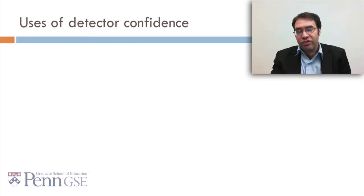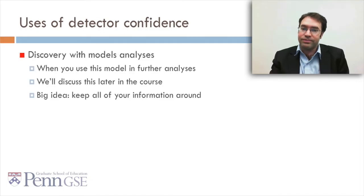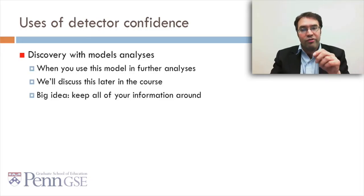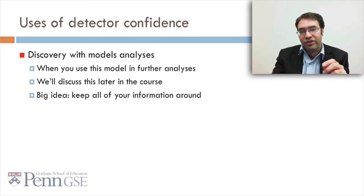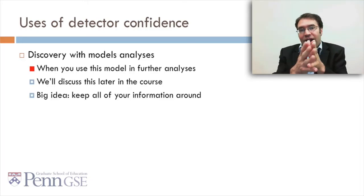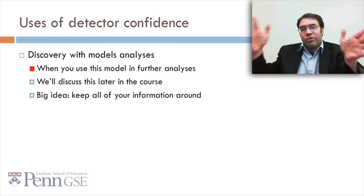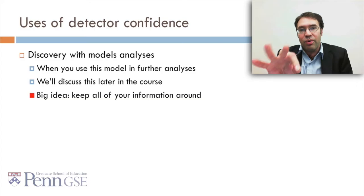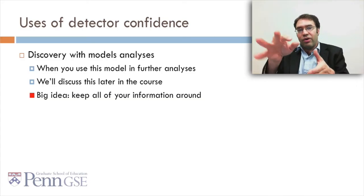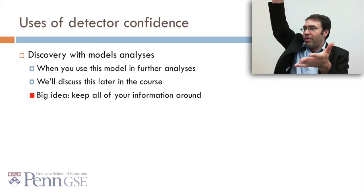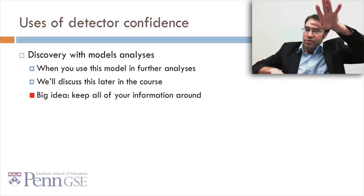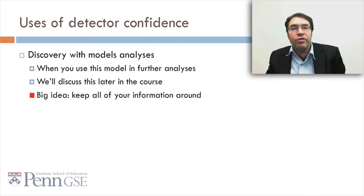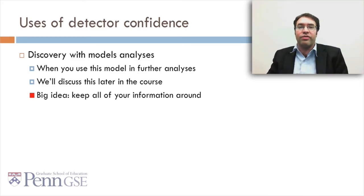Let's discuss a second use of detector confidence: discovery of models analyses. You take your model and then use it in further analyses — we're going to discuss this later in the course. The big idea is you want to use confidence rather than just yes or no. Rather than just 1 if you're 50% or above, and 0 if you're 50% or below, because you keep more information when you use confidence.